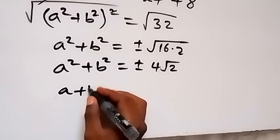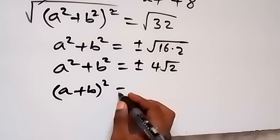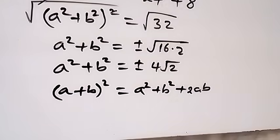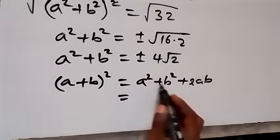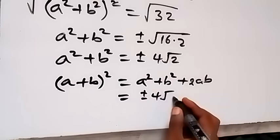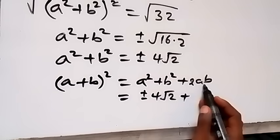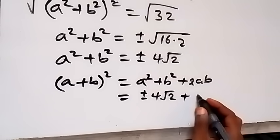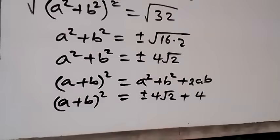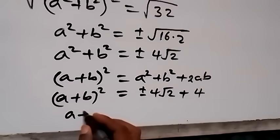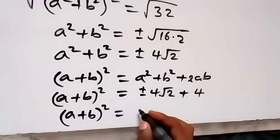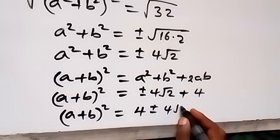Now using the identity (a + b)² equals a² plus b² plus 2ab. We have a² plus b² equals plus or minus 4√2, and 2ab equals 2 times 2, which gives 4. So (a + b)² equals plus or minus 4√2 plus 4.